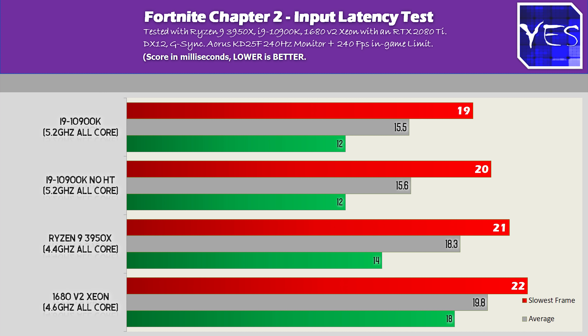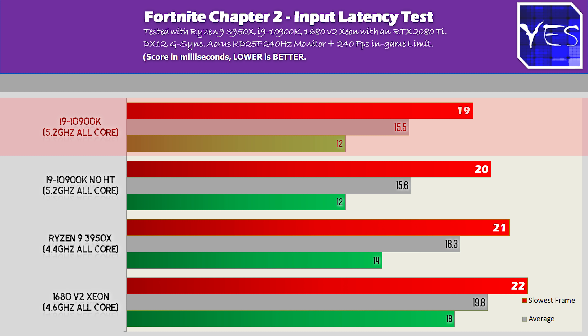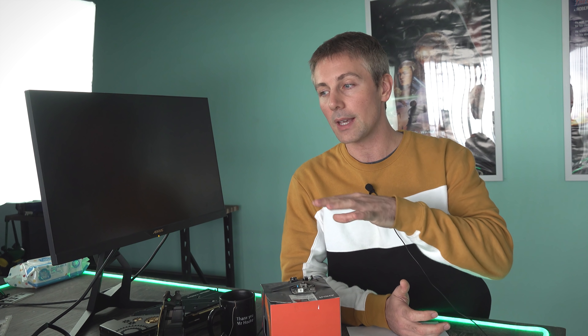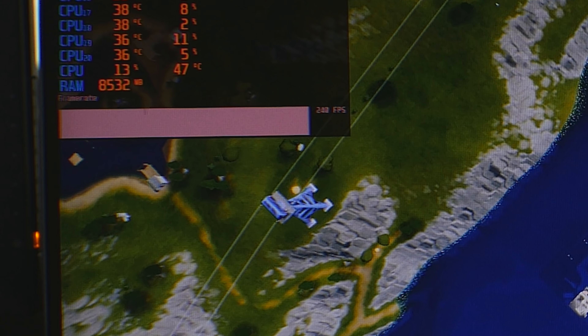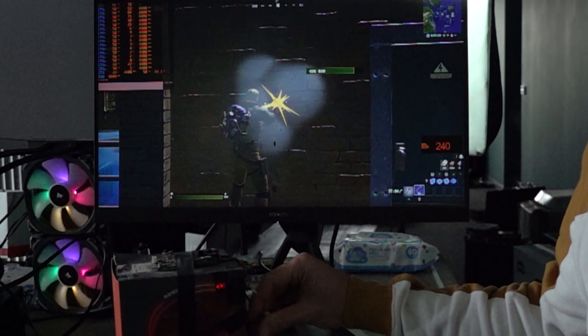Fortnite had the biggest difference between the CPUs. The 10900K scored an average of 15.5 milliseconds, the 3950X came second at 18.3, and the Xeon scored 19.8. For this test, we put Fortnite in DX12, enabled G-Sync on the Intel system and FreeSync on the AMD system, and capped FPS at 240 in-game — not only to give us a different look compared to CSGO, but because this game gives the best input lag with these settings enabled.